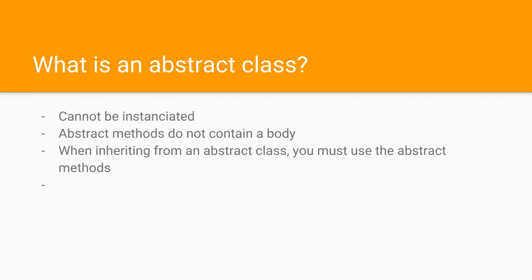Abstract methods do not contain a body, just like with interfaces, where you tell the programmer that in his classes he should use a certain method. You do the same thing with abstract methods — they do not contain a body but have to be implemented and defined. In abstract classes you may also define regular methods, which can be used. And when you inherit from an abstract class, you must use the abstract methods — you cannot skip them.